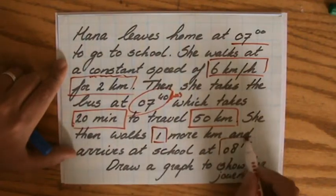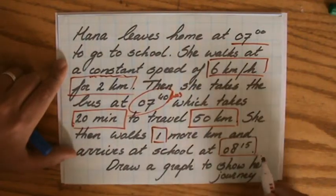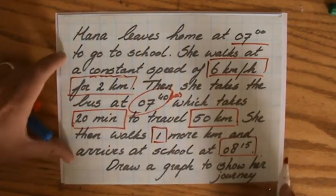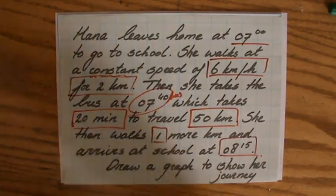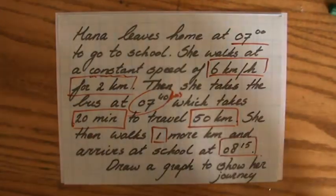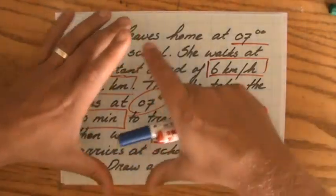She then walks one more kilometer and arrives at school at 8:15. We need to draw a graph to show her journey. There's a lot of information to work with here.